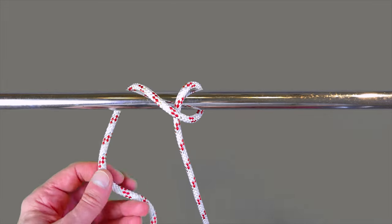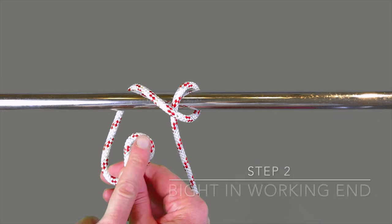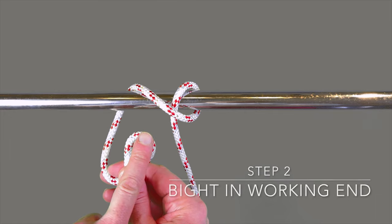Step two: take the working end, complete the turn around the object you're hitching to, and create a bight.